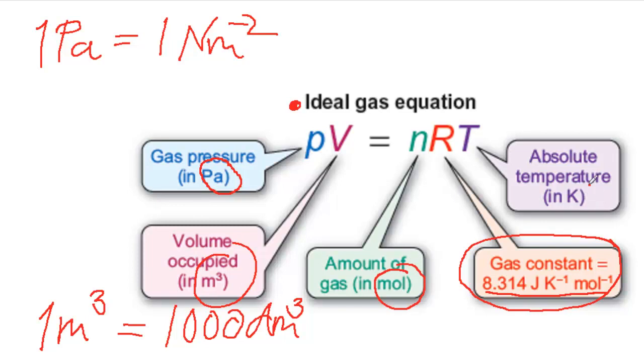And the temperature must be in kelvins. And if you've been given a temperature in Celsius, you're going to have to add 273.15 kelvins to the Celsius temperature to convert it to kelvins.